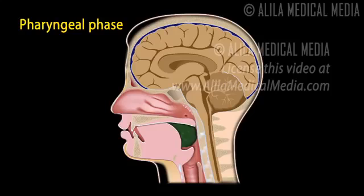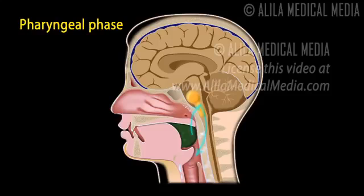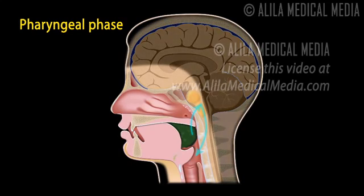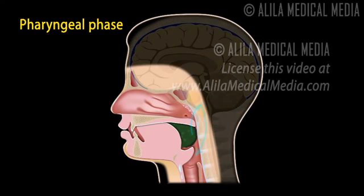The pharyngeal phase starts with stimulation of tactile receptors in the oropharynx by the food bolus. The swallow reflex is initiated and is under involuntary neuromuscular control. The following actions are taken to ensure the passage of food or drink into the esophagus.